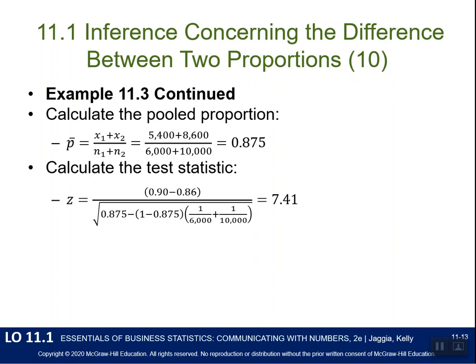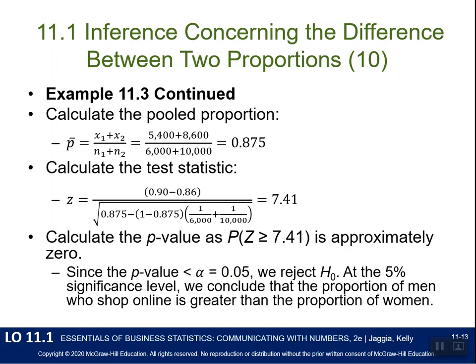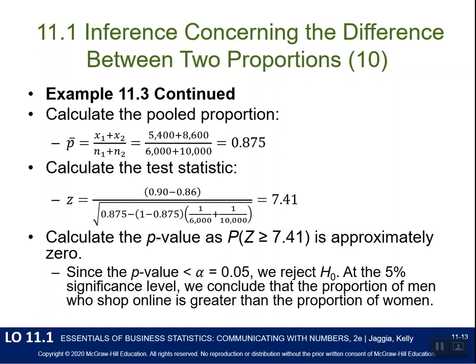We can look up 7.41 in the Z-table or use Excel's NORM.S.DIST function to calculate the p-value. We're calculating P(Z ≥ 7.41) — this is important because our Excel function always calculates the left tail, so for this right-tailed test we'll use one minus NORM.S.DIST. Let's jump over to Excel now.